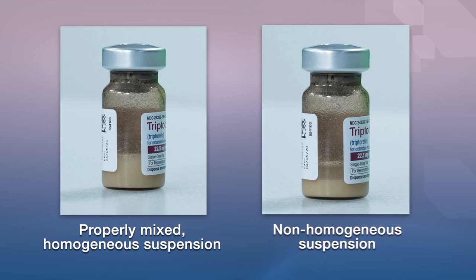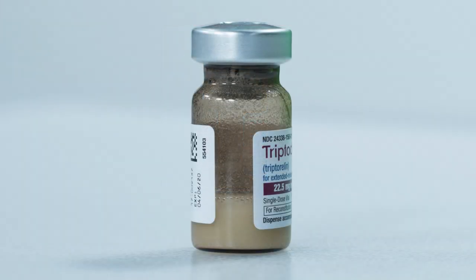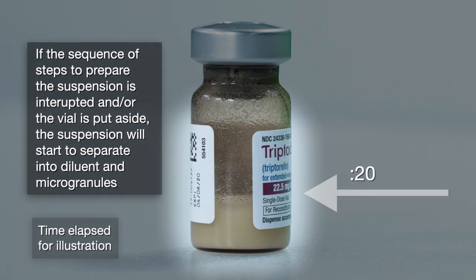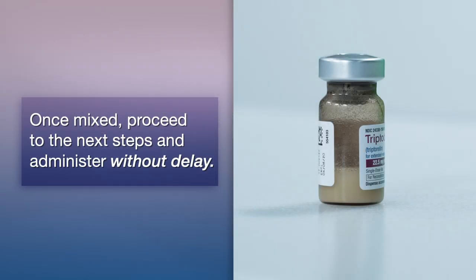The complete and homogeneous milky suspension of the product may require up to 60 seconds of agitation. The suspension will sediment very quickly, so it is imperative to withdraw the suspension into the syringe directly after suspending the product in the vial. Once mixed, proceed to the next steps and administer immediately. If the sequence of steps to prepare the suspension is interrupted or the vial is put aside, the suspension will start to separate into diluent and microgranules.